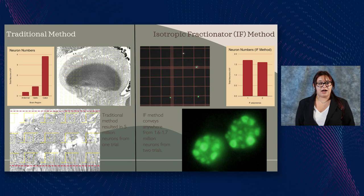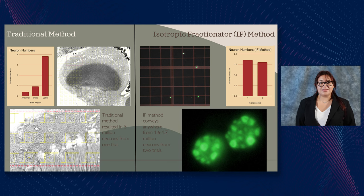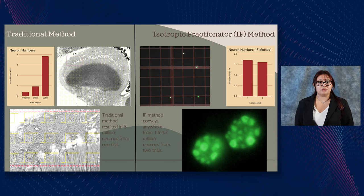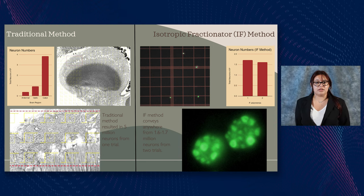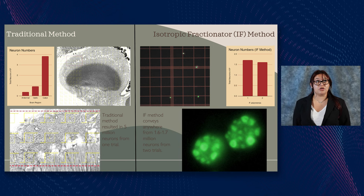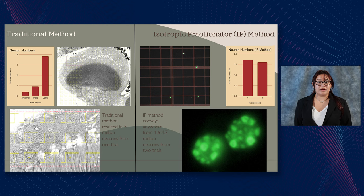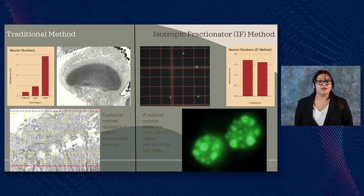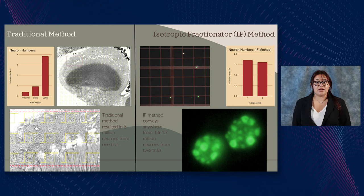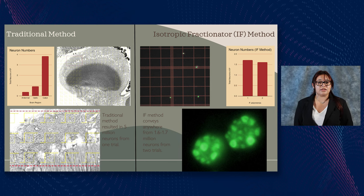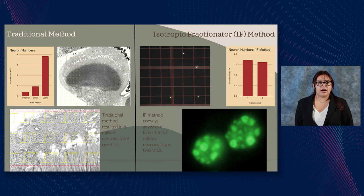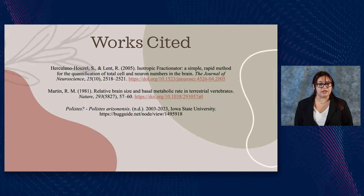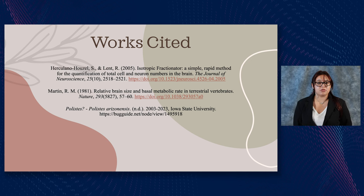Meanwhile, the isotropic fractionator (IF) method used a dissociative solution to break down cells except for their nuclei, making a 'brain soup' that was dyed to glow in the dark, then counted individual neurons under a microscope. This was much easier and less time-consuming — I did two brains in a day versus three days using the traditional method. The IF method has proven to be a better method when counting neurons, and we can apply that to future studies when trying to obtain more research into wasps. Thank you.